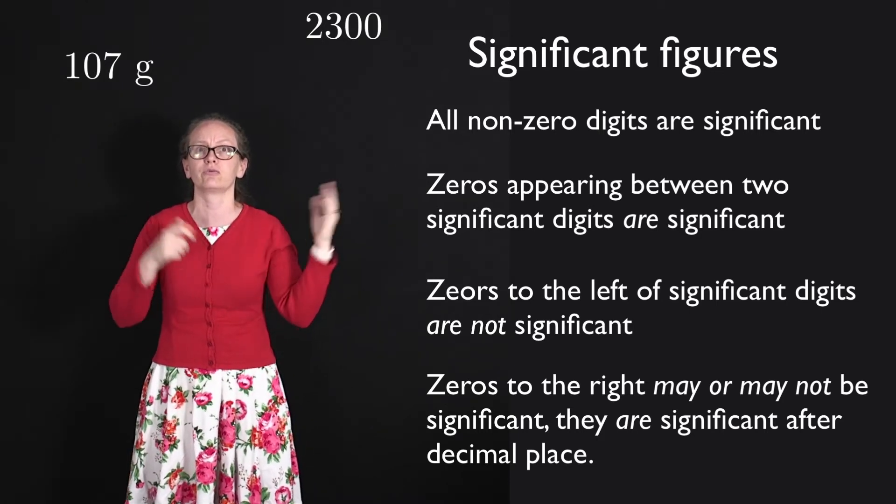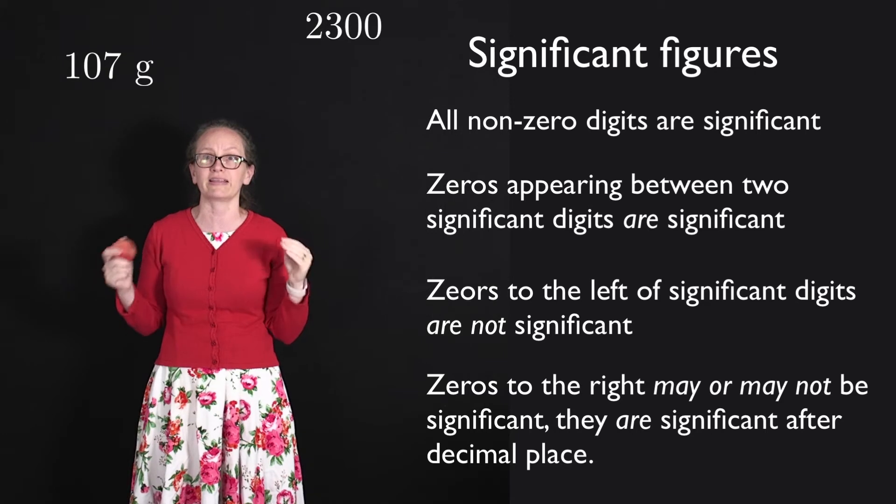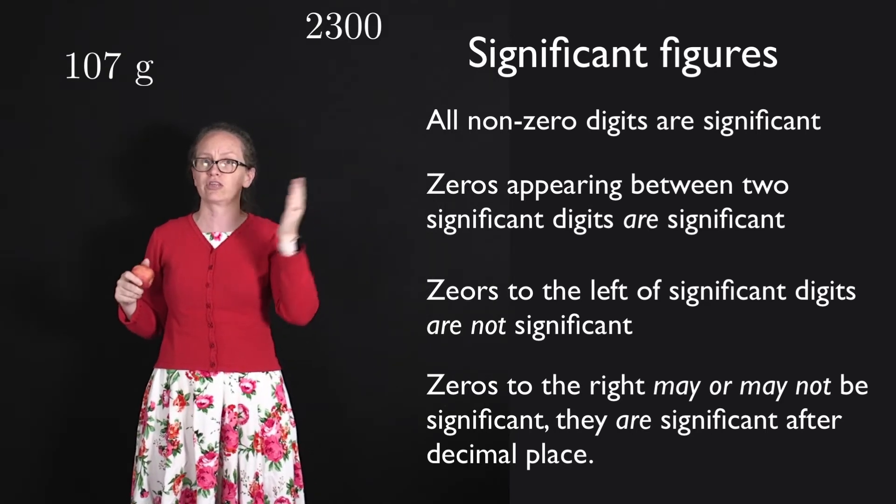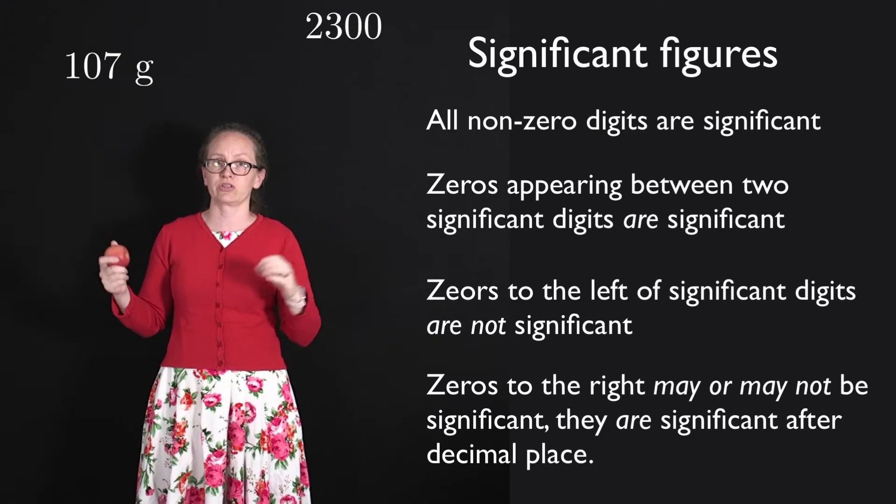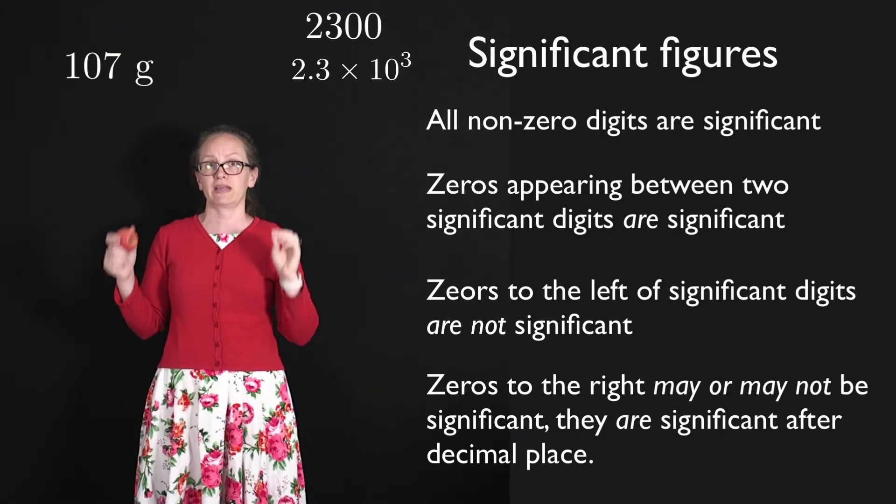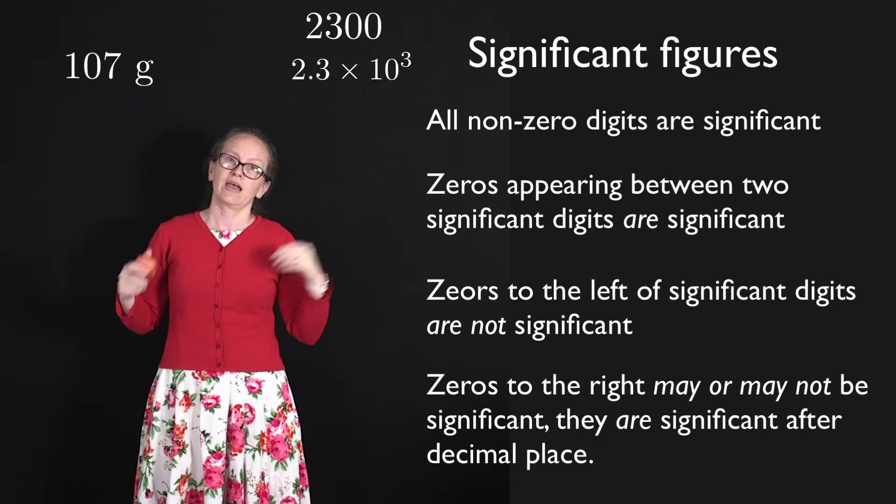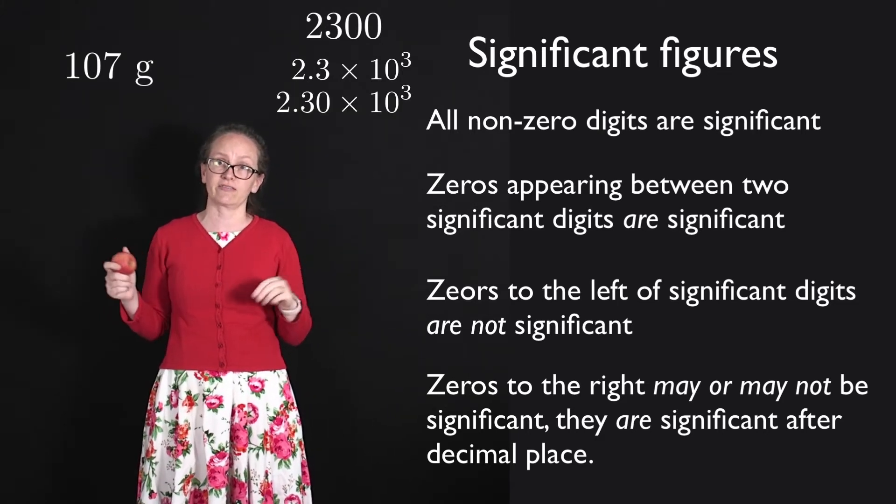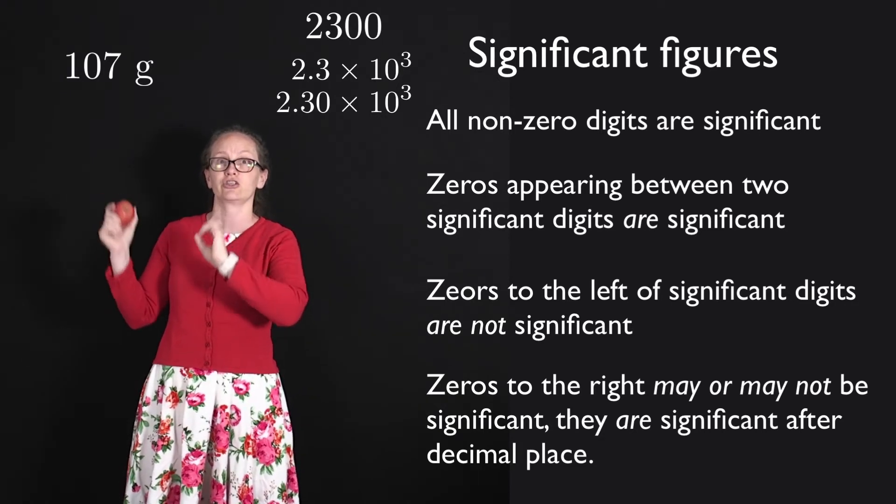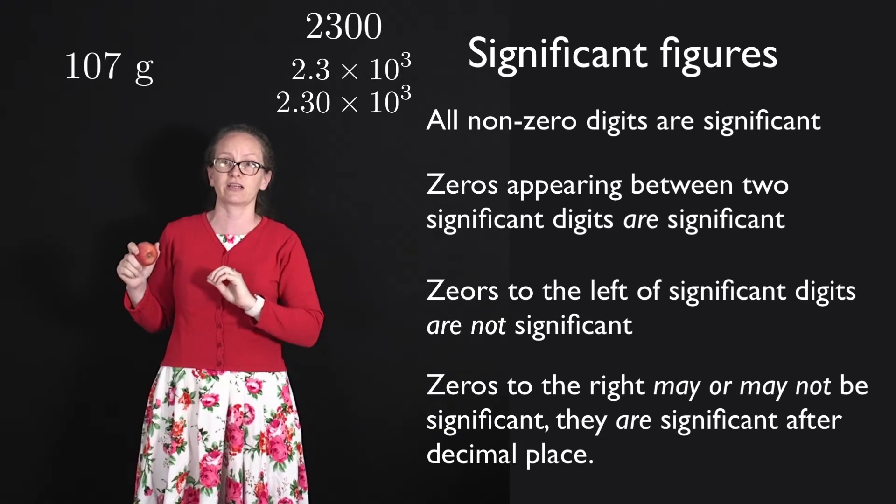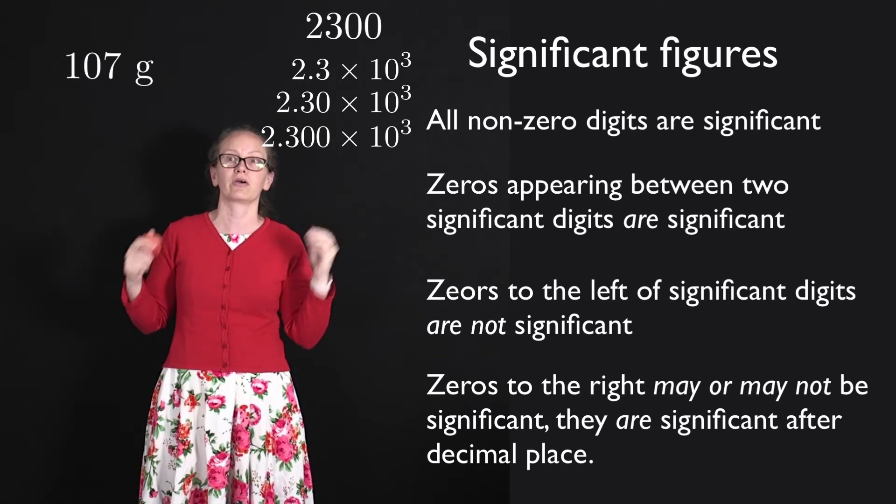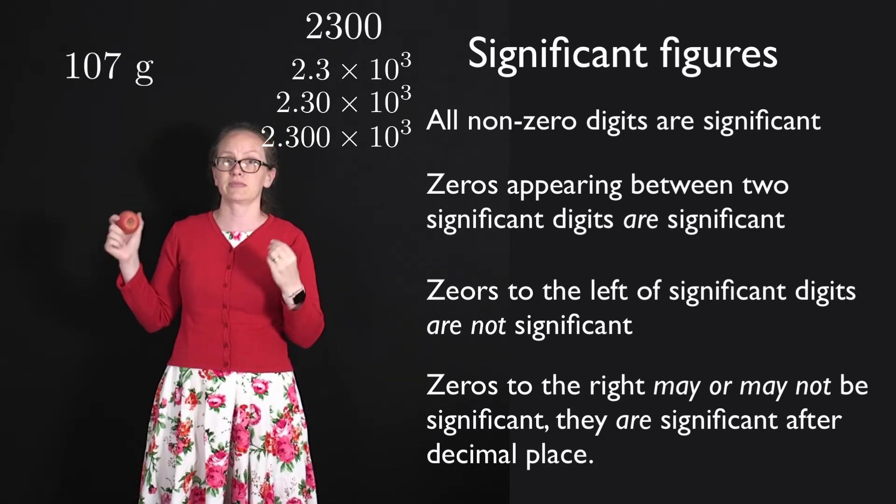So one way to show where the numbers are significant is to write everything in scientific notation. So for example, if I had 2300 and it only had two significant figures, I could write this as 2.3 times 10 to the 3. If one of the zeros was significant, I could write it as 2.30 times 10 to the 3, which clearly shows that it has three significant figures, or if two of them were significant, I could write this as 2.300 times 10 to the 3.